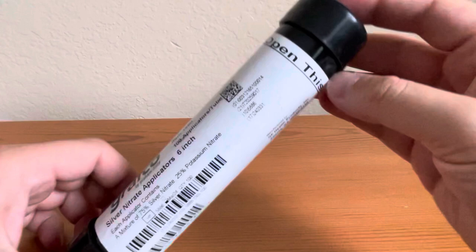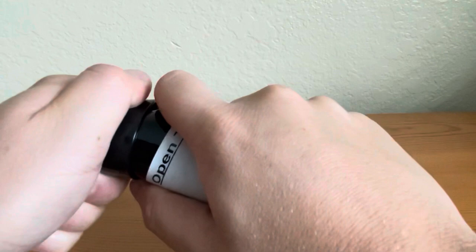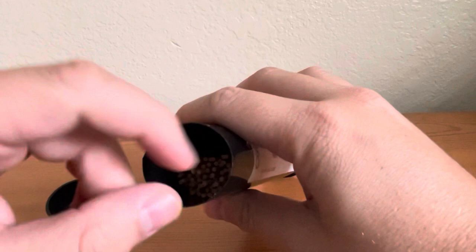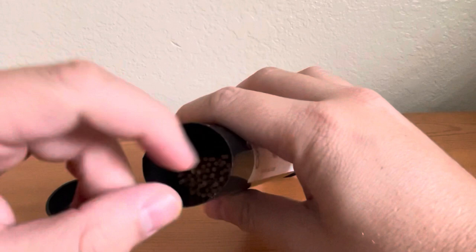You want to store in a closed package at room temperature in a dry place protected from light. Silver nitrate will oxidize and turn dark brown upon exposure to light.